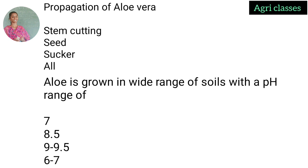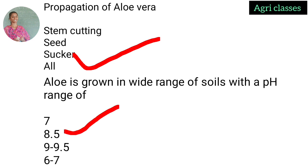Next question: propagation of aloe vera — options are stem cuttings, seeds, suckers, or all of the above. The correct answer is suckers (root suckers). Next question: aloe is grown in a wide range of soils with a pH range — options are 7, 8.5, 9 to 9.5, or 6 to 7. The correct answer is 8.5.